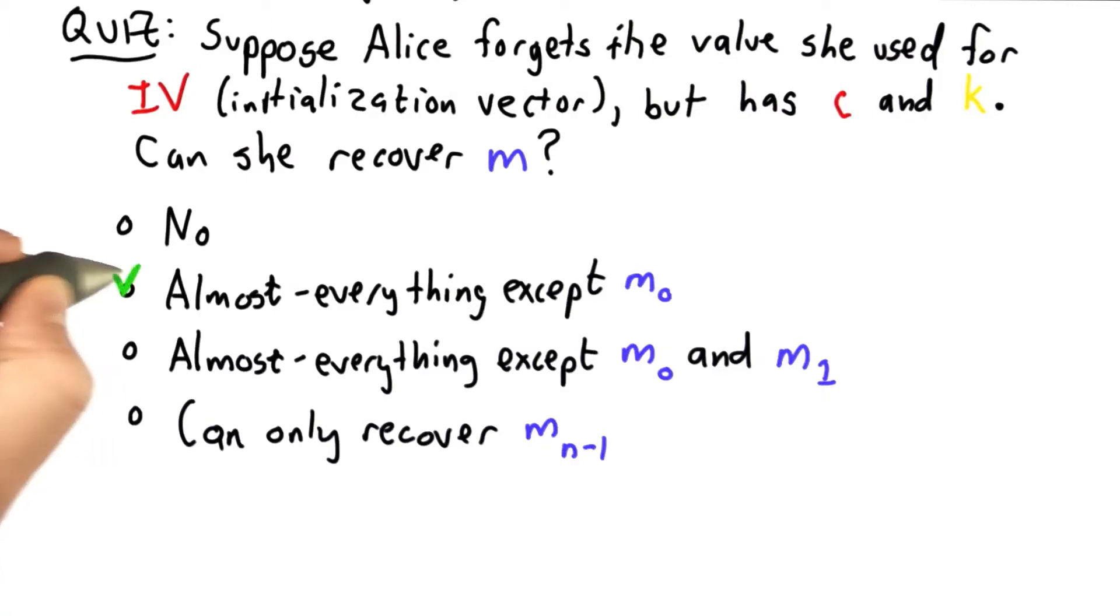The answer is the second choice, that she can almost recover the full message, everything except for the very first block. The point of the initialization vector is just to hide repetition among encryptions that would appear looking at the first block.